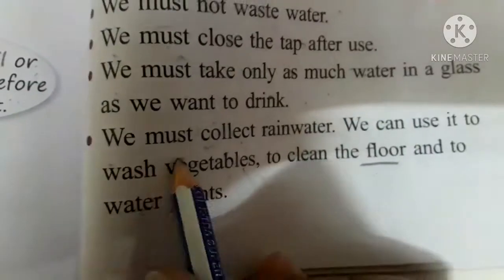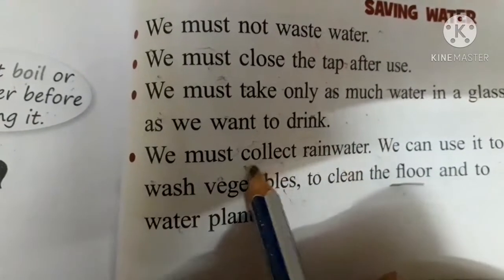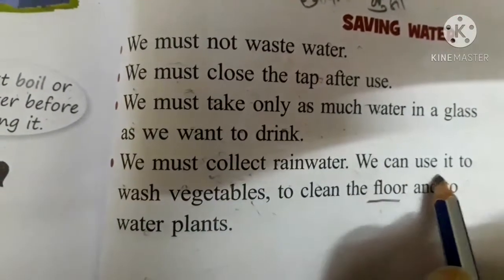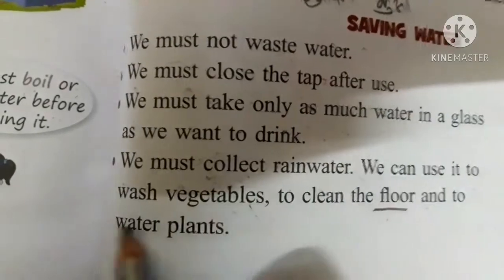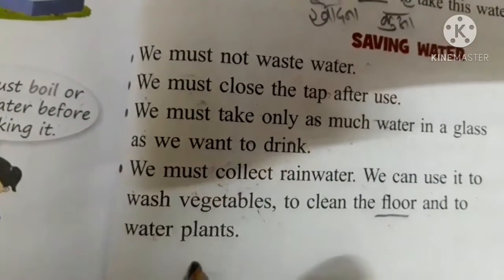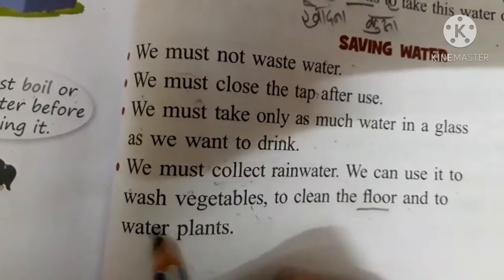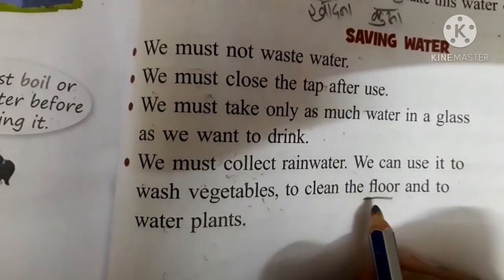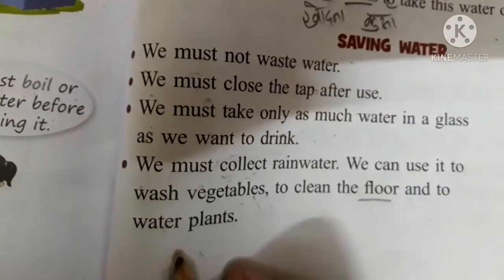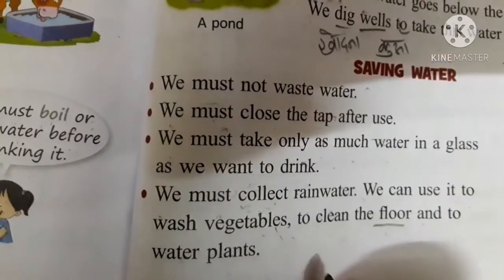We must collect rain water. हमें rain water को collect करना चाहिए। Collect means इकट्ठा। We can use it to wash vegetables, to clean the floor, and to water plants. इस water को हम vegetable को wash करने के लिए, फर्श को clean करने के लिए, और plants को पानी देने के लिए use कर सकते हैं।